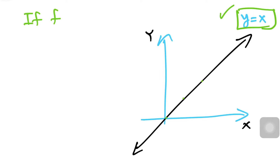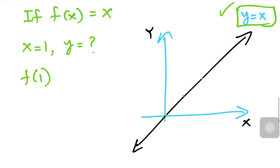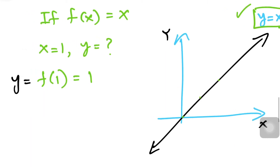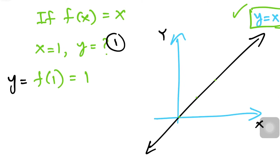If f(x) = x and x is equal to one, what's the y-value? One thing you can do is just plug it in: f(1) = 1. Remember, y is f(1), so in this case the answer is one.